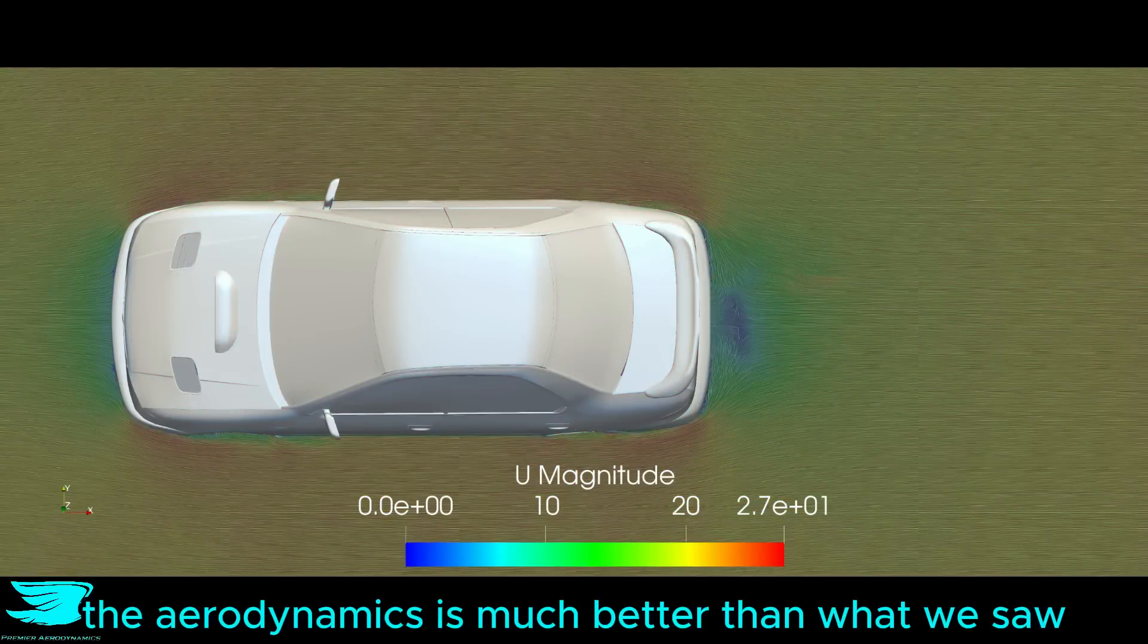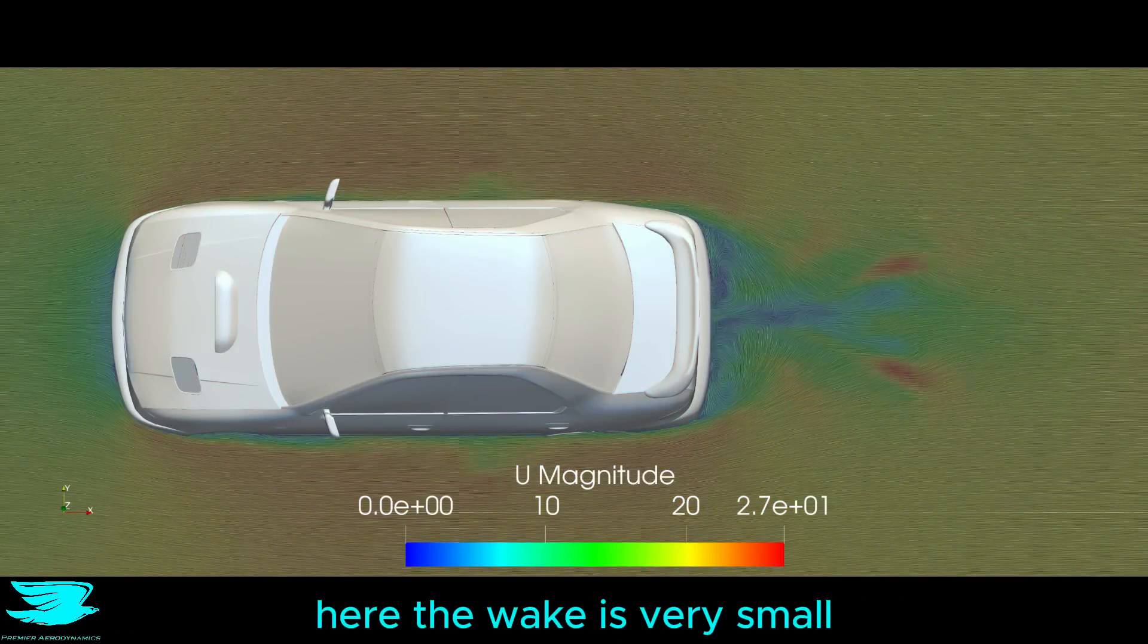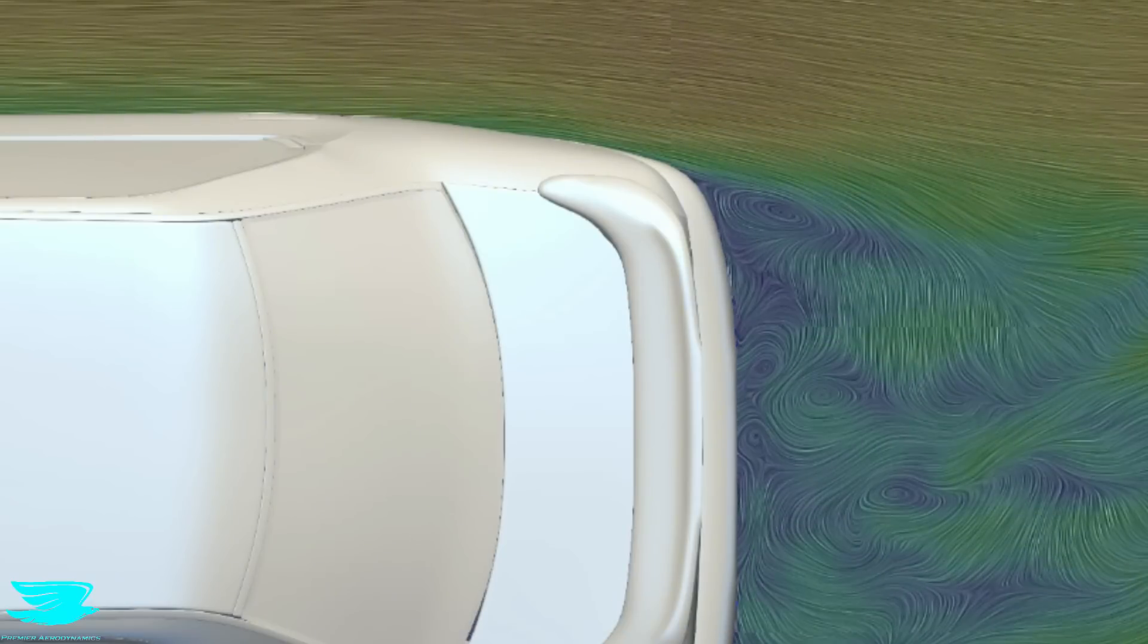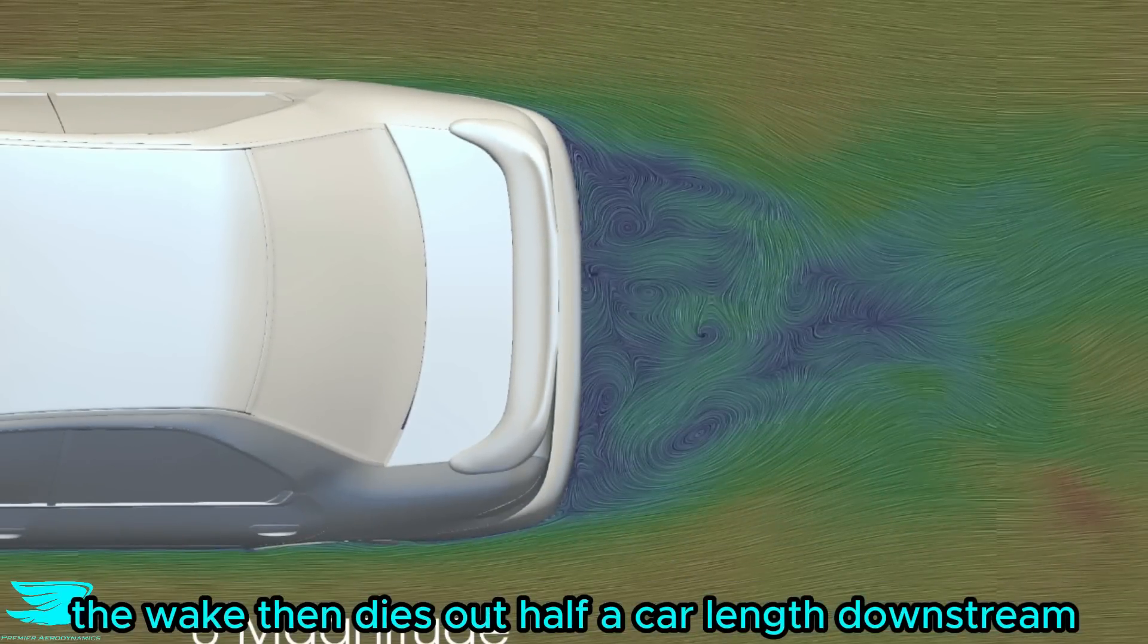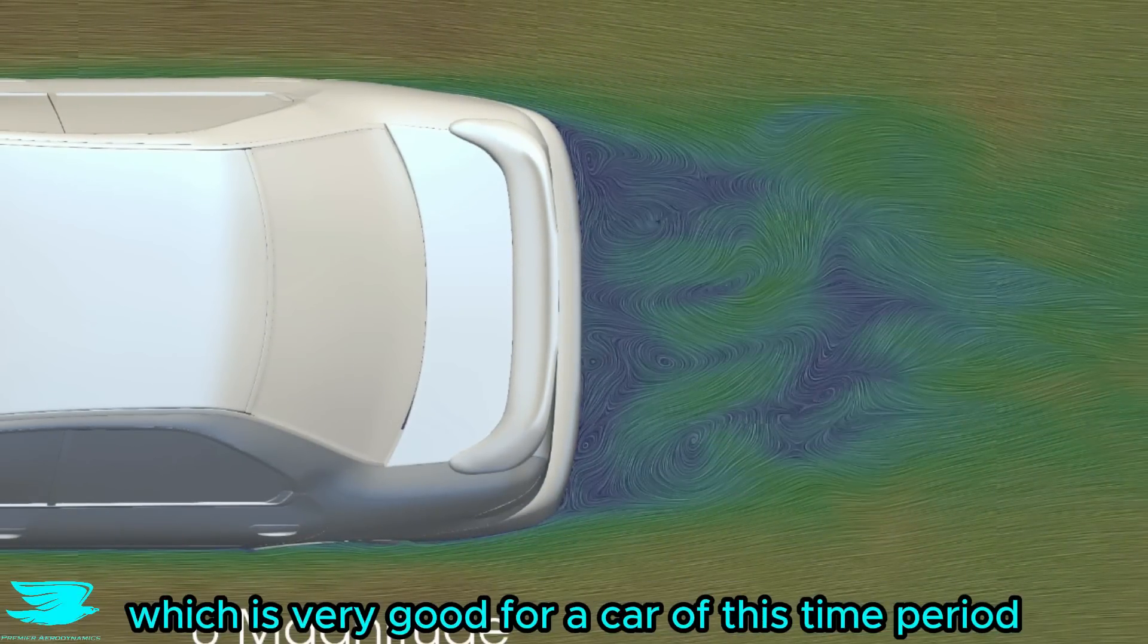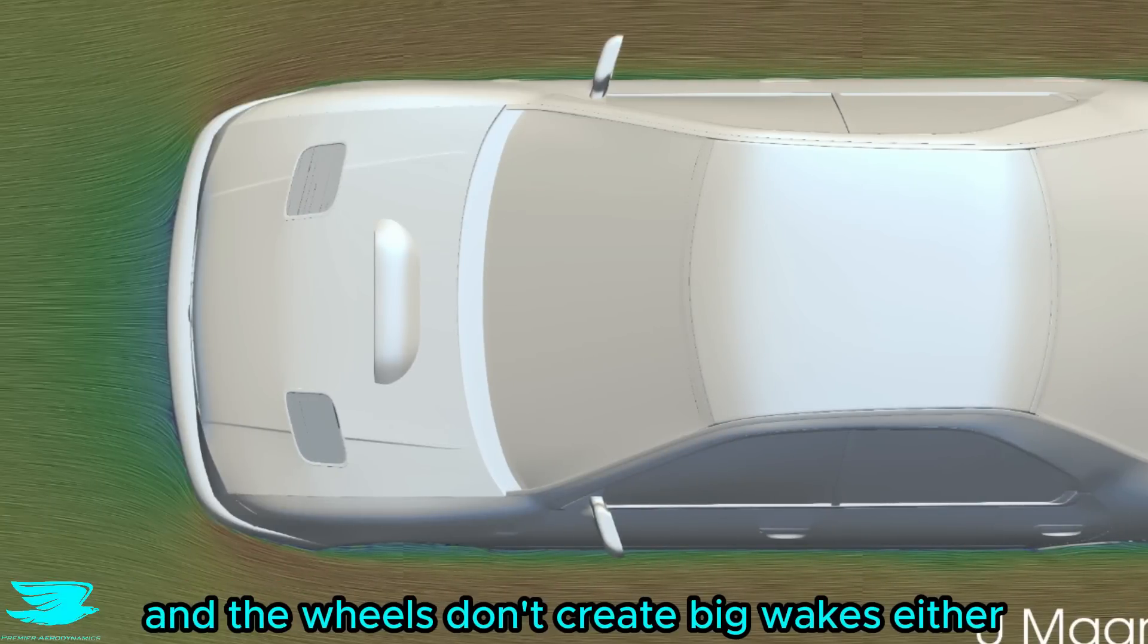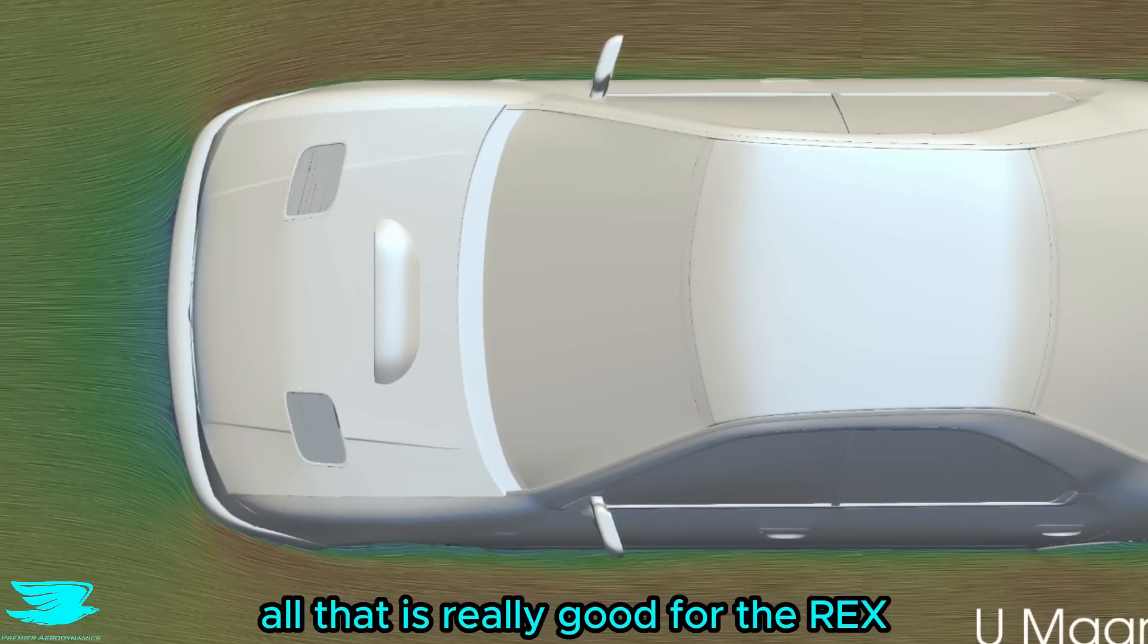From on top, the aerodynamics is much better than what we saw in the side planes. Here, the wake is very small, as it follows the gentle curves around the back. The wake then dies out half a car length downstream, which is very good for a car of this time period. There is no flow separation around the front edges and the wheels don't create big wakes either. All of that is really good for the Rex.